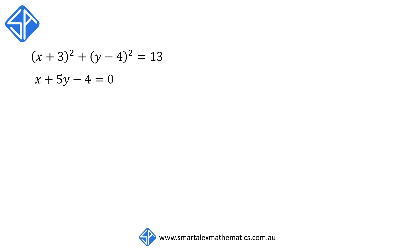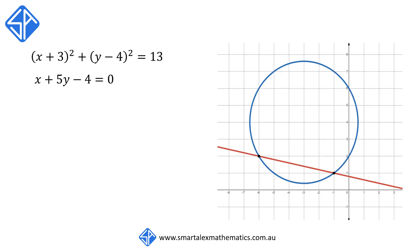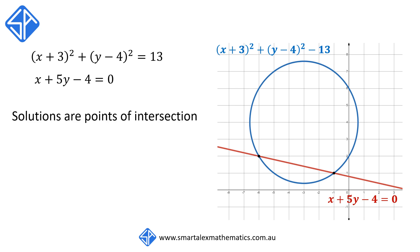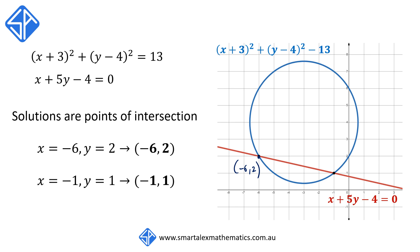Now let's make sense of our solutions. The first equation, x plus 3 squared plus y minus 4 squared equals 13, is the equation of a circle, and the second equation, x plus 5y minus 4 equals 0, is the equation of a straight line. The solutions are essentially the points of intersection of the line and the circle: our first solution x equals negative 6 and y equals 2 corresponds to the first intersection point at coordinates negative 6 and 2, and our second solution x equals negative 1 and y equals 1 corresponds to the second intersection point at coordinates negative 1 and 1.